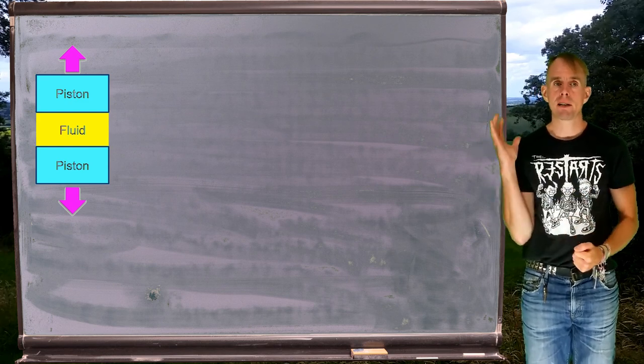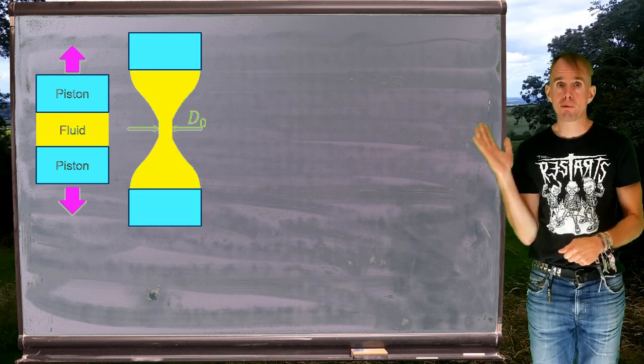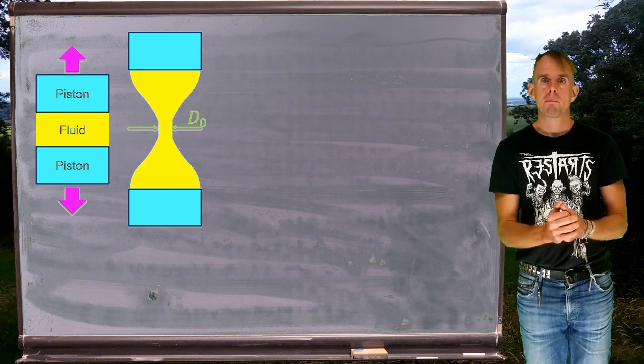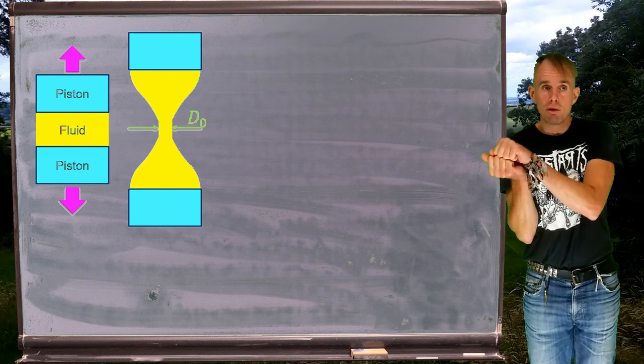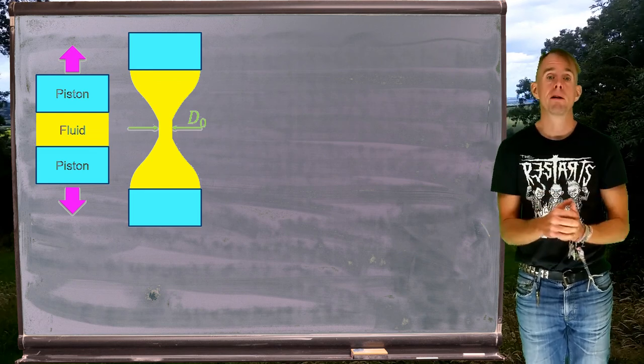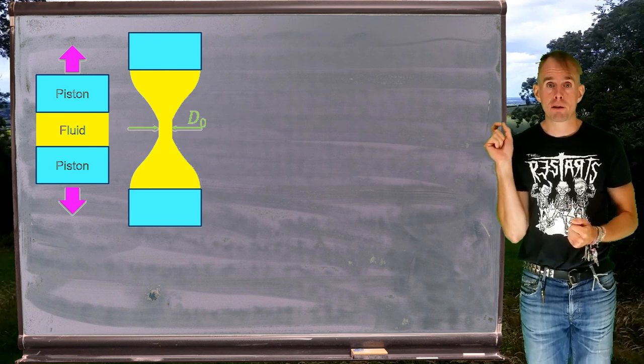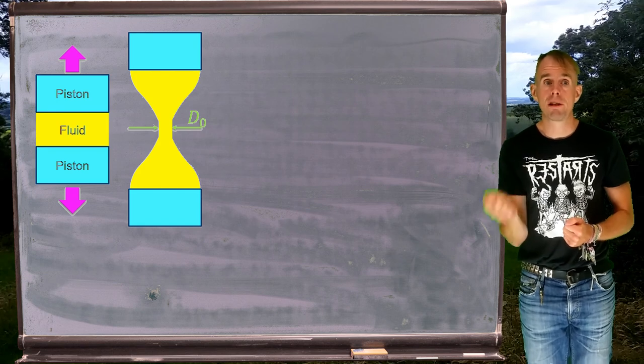Here we have our yellow fluid between our two blue pistons. We're going to pull the pistons apart. And we form a fluid bridge between the upper and the lower piston. Now, once any inertial movement of the fluid has died down due to the pulling apart of the two pistons, a fluid filament will form in the middle of that bridge, which is where I've put those two arrows. And it will form with a given diameter, which I've called d0.